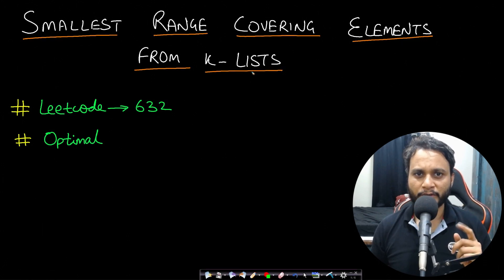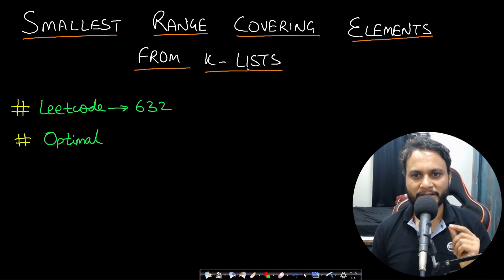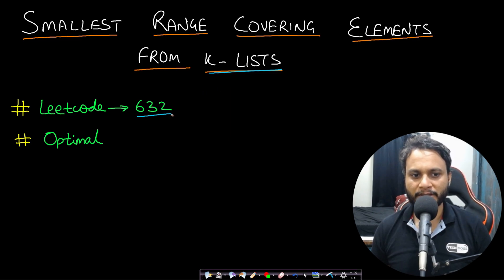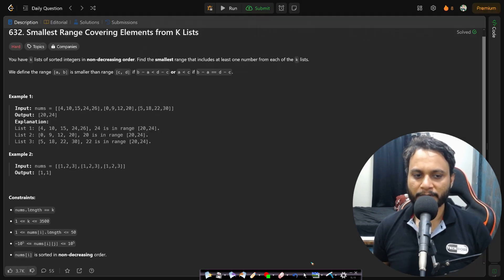Hello guys, welcome back to TechDose. In this video, we will see the Smallest Range Covering Elements from K Lists problem, which is LeetCode number 632. Let's look at the problem statement.